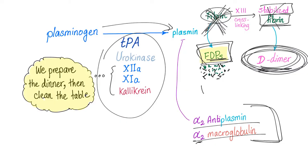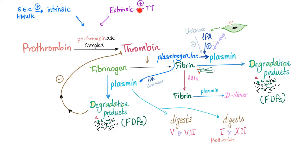Here is a quick summary. Extrinsic pathway, thanks to tissue factor. Intrinsic pathway activated by subendothelial collagen, high molecular weight kininogen, and plasma kallikrein. Both will activate the prothrombinase complex to convert prothrombin into thrombin. Thrombin will convert fibrinogen into fibrin. Once the fibrin is being formed, plasminogen is incorporated into the fibrin clot. TPA, which comes from the injured endothelium, and urokinase — this process takes days — are going to convert plasminogen into plasmin. Plasmin will then destroy fibrin into fibrin degradation products, degrade fibrinogen into fibrin degradation products, and digest factors 5, 8, prothrombin, and factor 12.